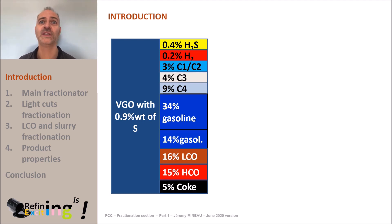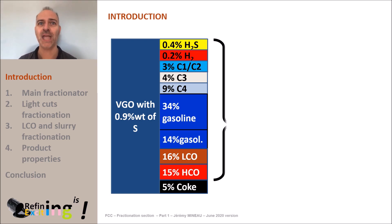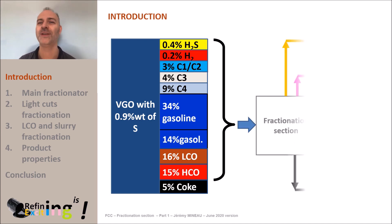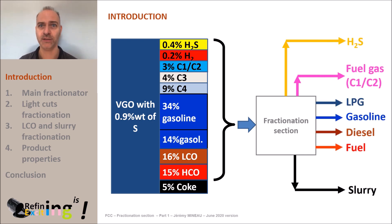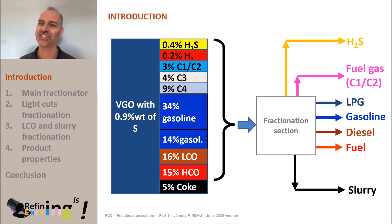Once this mixture of molecules is produced in the reactor in gas form at a temperature of around 520 degrees C, it must be separated into cuts that can be incorporated into the finished fuel produced by the refinery. We will typically produce a fuel gas cut, a LPG cut, several gasoline cuts, a diesel cut and finally a slurry cut. We will later detail the final destination of these cuts.